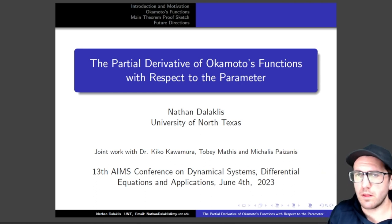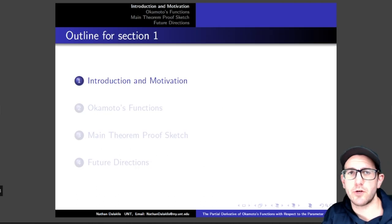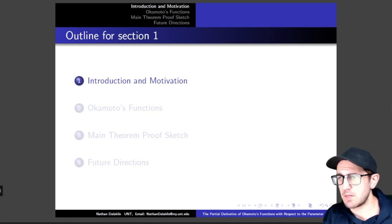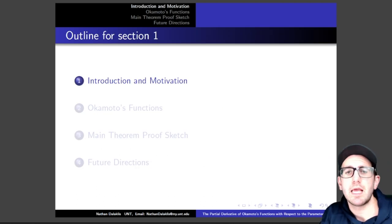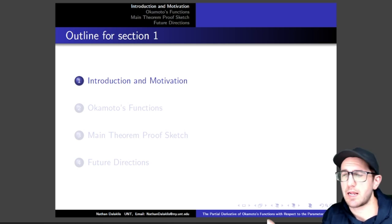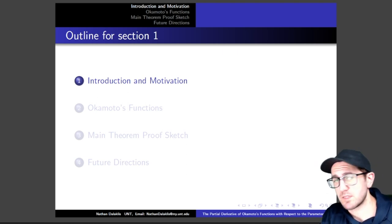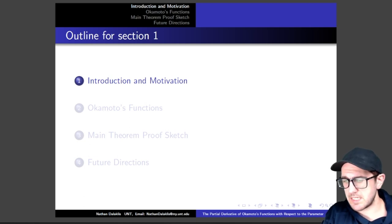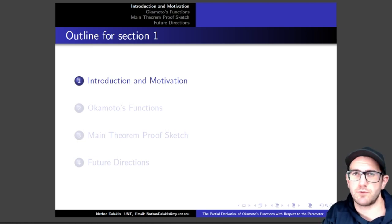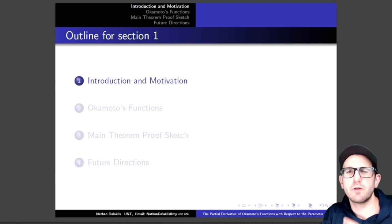The goal of this talk is to do a few things: I want to introduce you to some ideas and motivate why we did what we did. I want to talk about Okamoto's functions, then look at partial derivatives of Okamoto's functions and look at our main theorem and how we sketch that proof out. And if we have time — I'm going to try to keep this to 20 minutes — I want to go over some future directions.